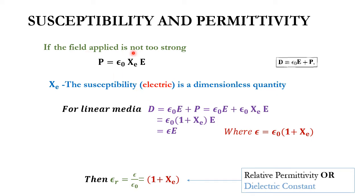First, susceptibility and permittivity. If the applied electric field is not too strong — less than about 10⁶ volts per meter — then polarization P, which is polarization per unit volume, can be represented as P = ε₀χₑE, where ε₀ and χₑ are constants. Here χₑ depends on the material and is called the electric susceptibility.